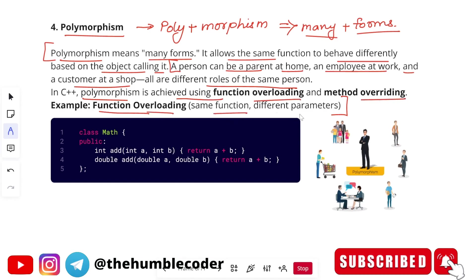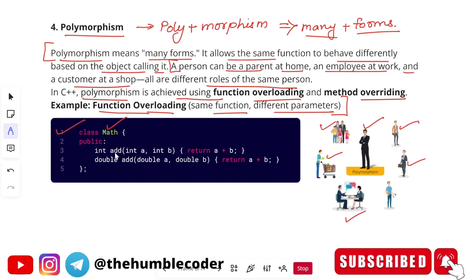One such example: a person acting in different roles — a student, an employee at the office, a father at home, a customer at a grocery store, and an interviewee at an interview. The person is the same but has many forms in different scenarios. In the code example, we have a 'Math' class with an 'add' function taking integers a and b, and another 'add' function with different parameter types — same function name but different forms. That is why this is an example of polymorphism.